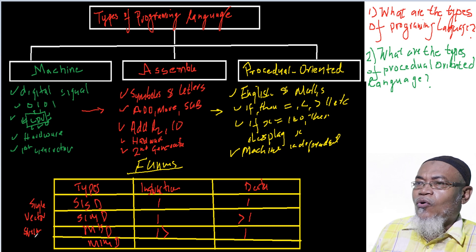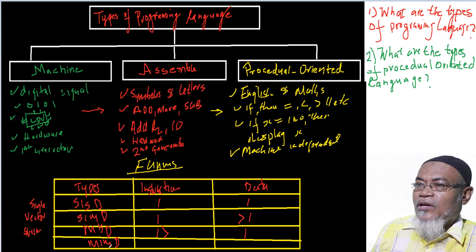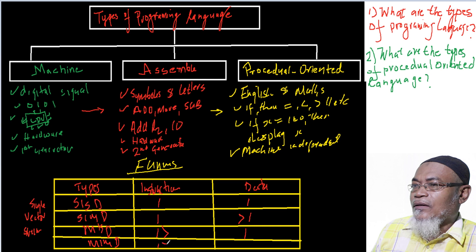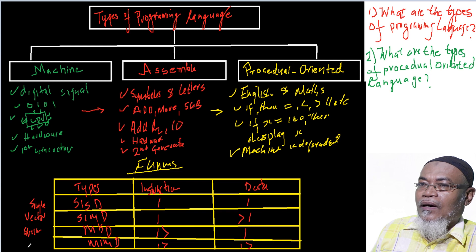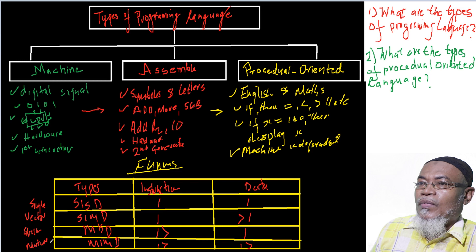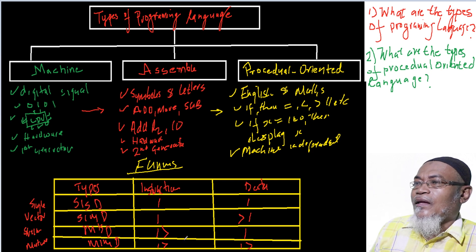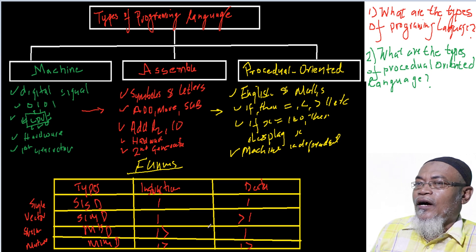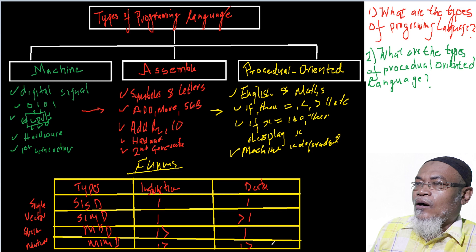The last type is MIMD, which stands for Multiple Instruction, Multiple Data. This is a typical multi-core computer architecture and represents the majority of computers we have today, such as dual-core, Core i3, Core i5, and Core i7 processors.